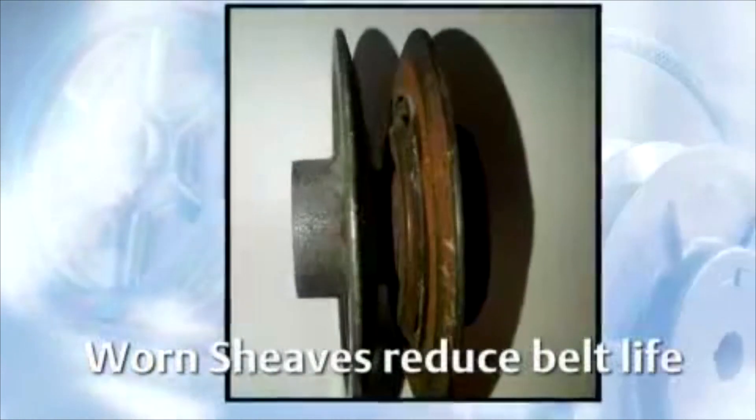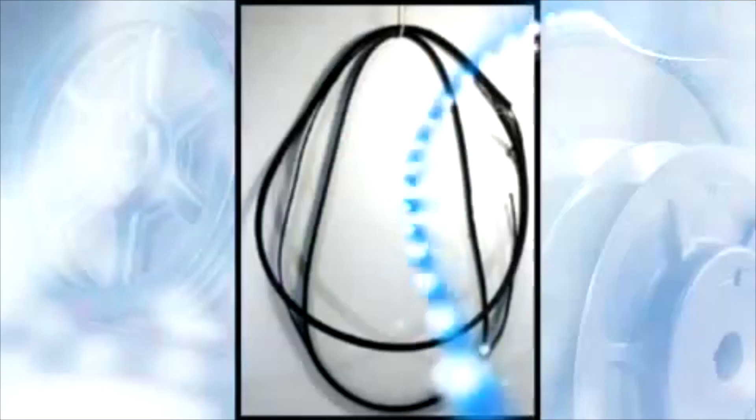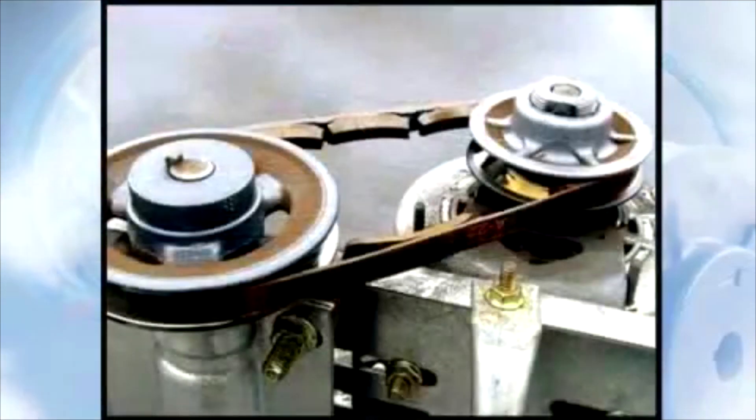Worn, damaged, or dirty shivs will substantially reduce belt life. Nicks or gouges can cut the belt. Dirt and debris in the grooves can abrade the belt. Oil can attack the belt materials, and worn grooves may allow the belt to bottom out, slip, and become damaged.